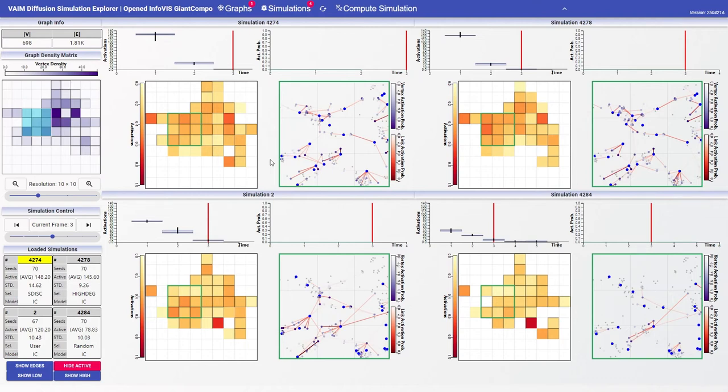By using the buttons in the simulation control view it is possible to modify the appearance of each single simulation. It is possible to hide and show in the node link view the diffusion and graph edges, the latter shown in light gray.